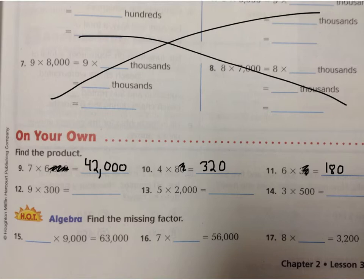Down to number 12, it says 9 times 300. 9 times 3 is 27. There were two zeros there, so I put two zeros onto the end, 2,700.